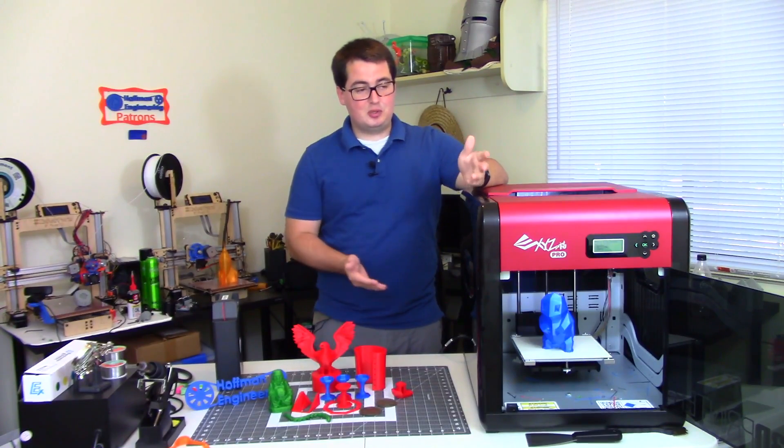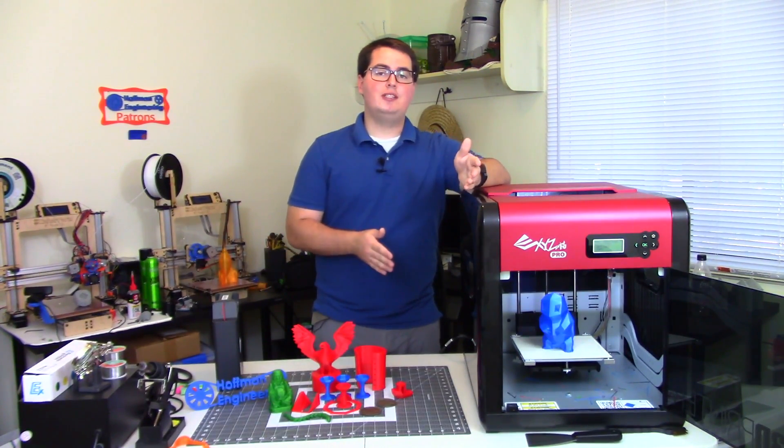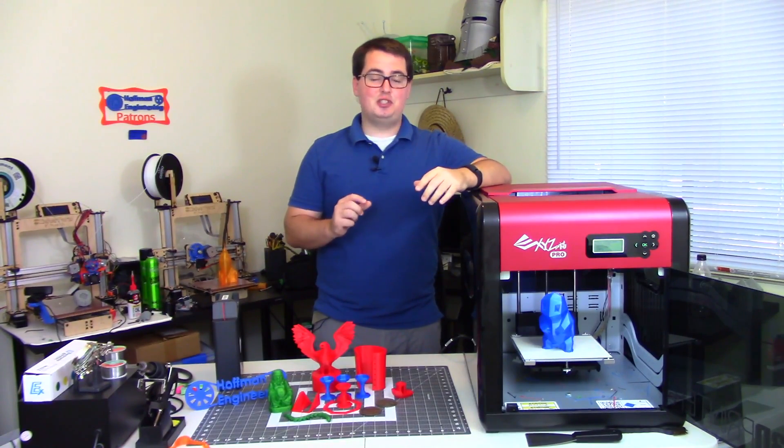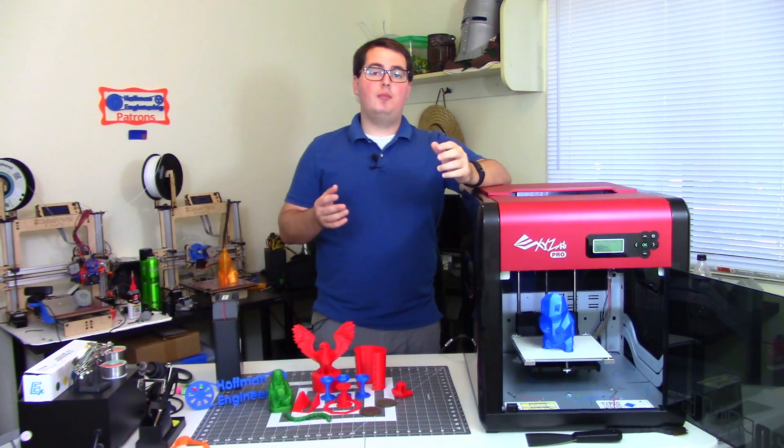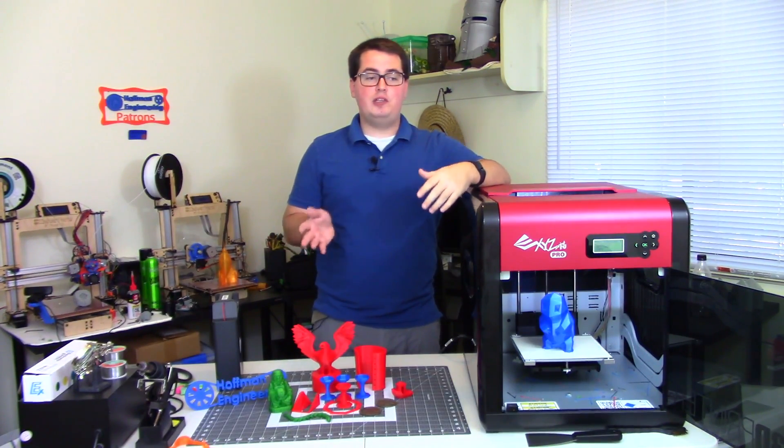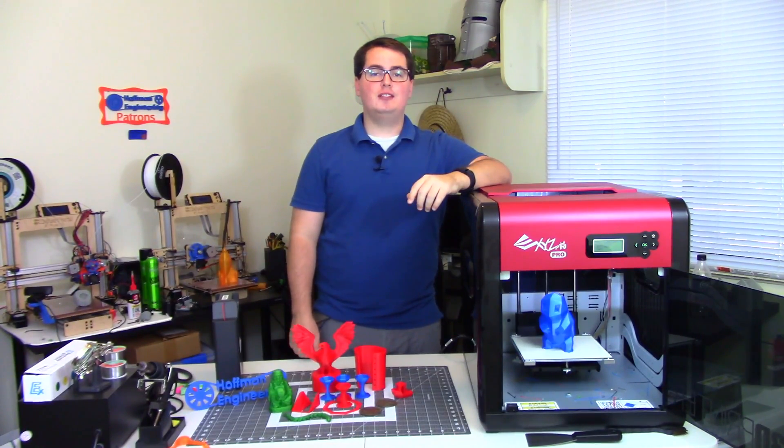Smaller PLA prints can have a little trouble on this machine because there is no cooling fan blowing directly on the prints, so overhangs can get a little droopy. Larger PLA prints, though, like the Squirtle, print wonderfully, or if you just slow it down a little bit, that'll help mitigate the droopiness on the overhangs.